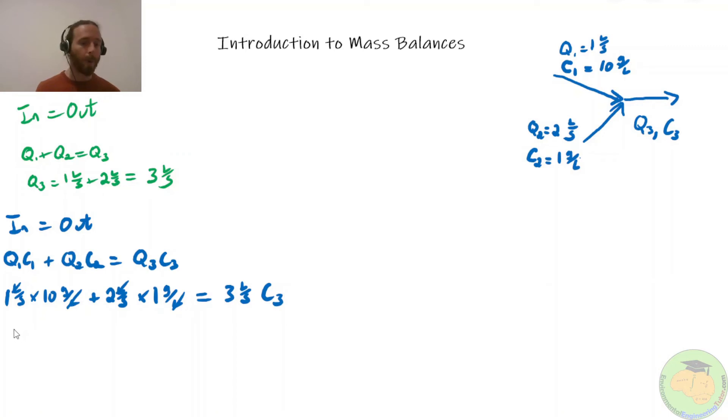Let's rearrange for c3 before we do any of the calculations. This is a small trick I recommend to make a big difference in reducing mistakes. Because every time we start putting things into the calculator, it's just easy to drop a digit somewhere. So I try to do that all in one step. C3 equals 1 liter per second times 10 grams per liter plus 2 liters per second times 1 gram per liter all over 3 liters per second.